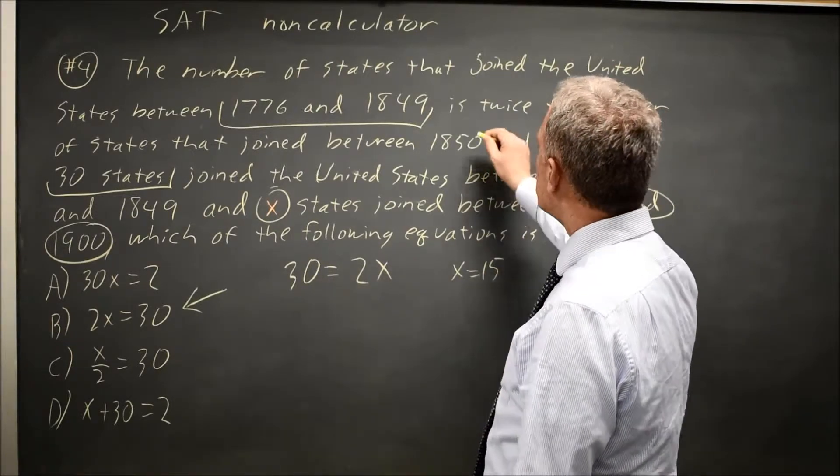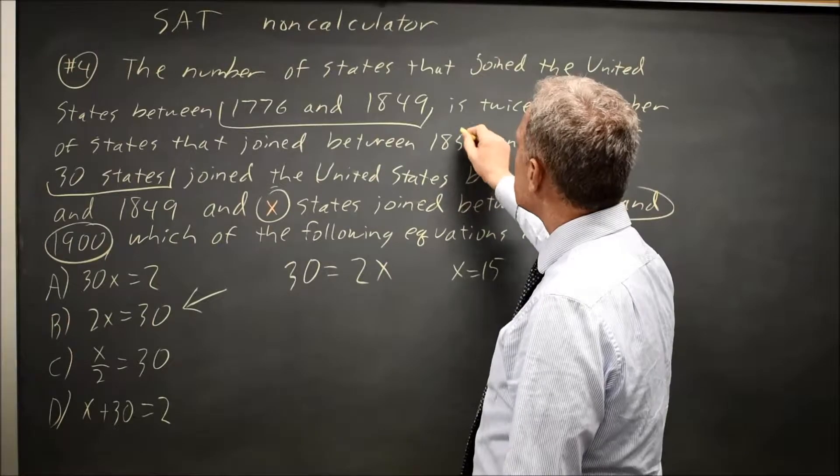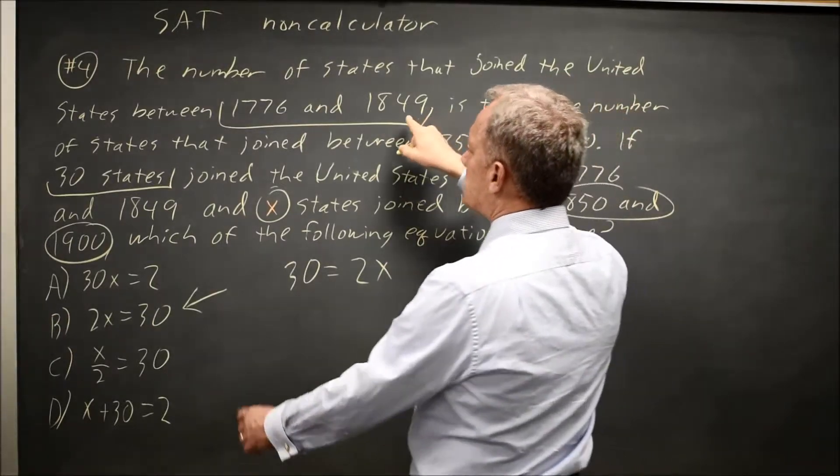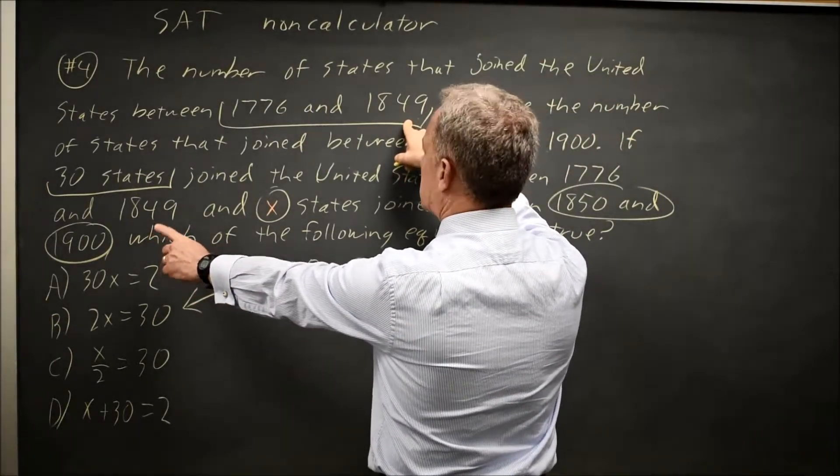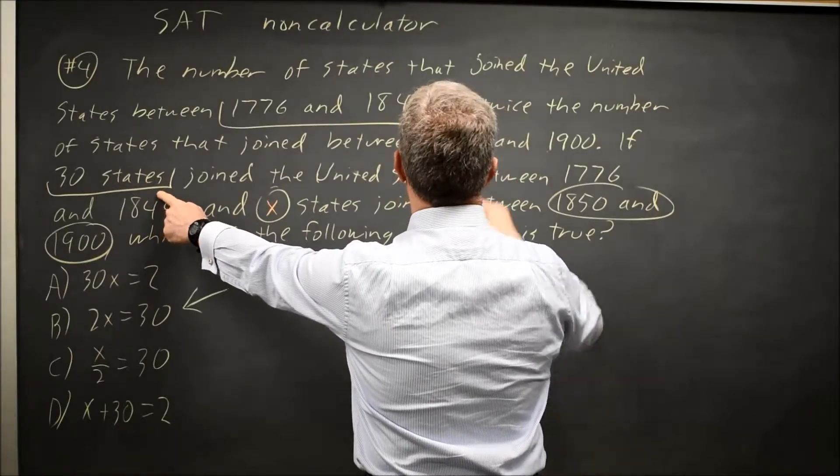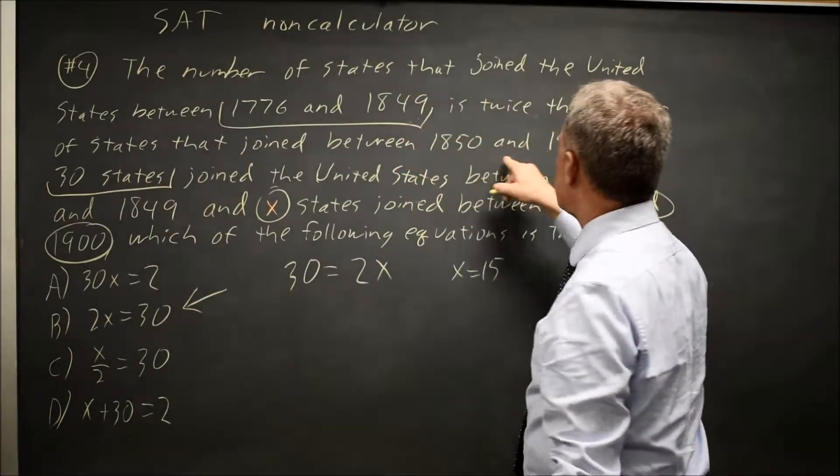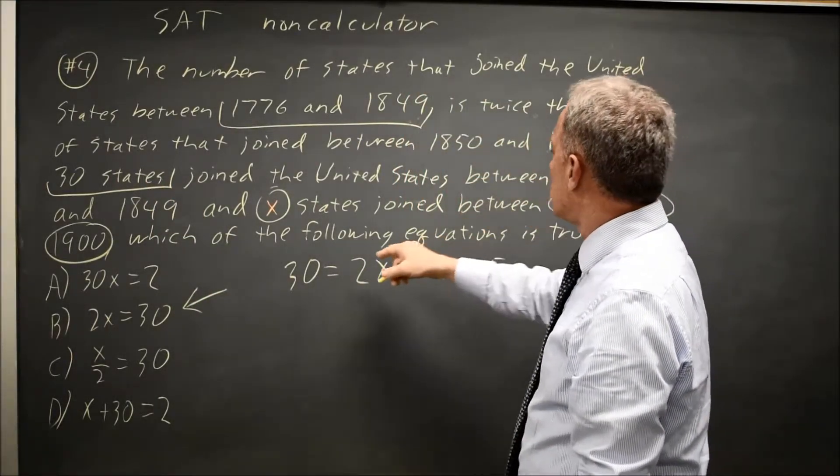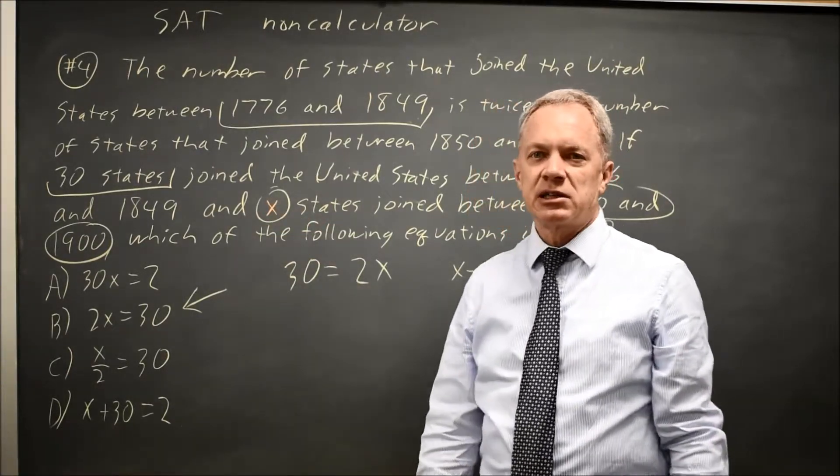Or you can just read the words of the problem a few times. The number of 1776 to 1849 is 30, and that's twice the number 1850 to 1900, which would be X. So 30 equals twice X.